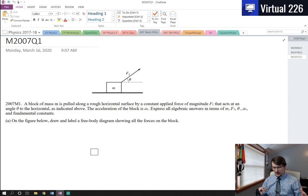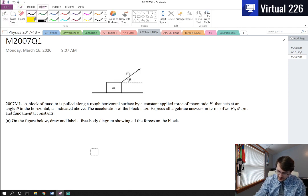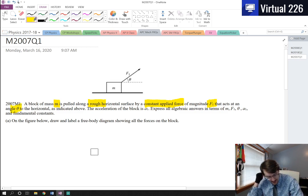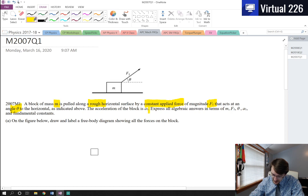What we're looking at here is a block of mass M being pulled along a rough horizontal surface by a constant pulling force, which is F1. So it's a constant applied force, F1. It's a rough surface, so we know there's friction. There's the mass. And it's at an angle theta to the horizontal, as we see in that picture. We know the acceleration of the block is A1. And we're using M, F1, theta, A1, and fundamental constants to get our answer.